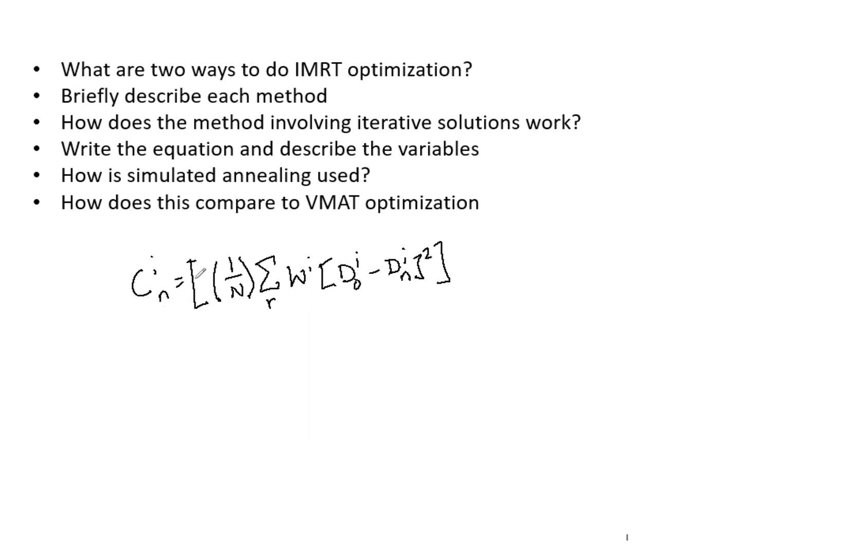So the nth iteration and the organ i. The d0 is the desired dose in structure i. N, the capital N, is the number of dose points. The dn is the computed dose at that same point, and then w is the weight factor in structure i. So all these variables go into determining the overall cost function.